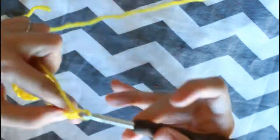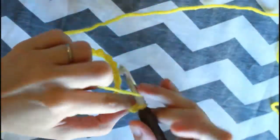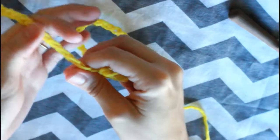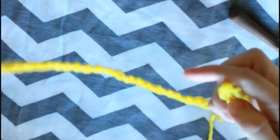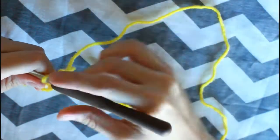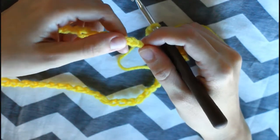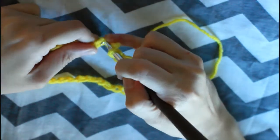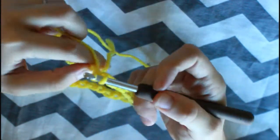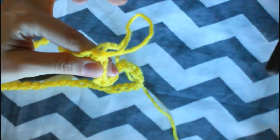Once you're done, we're gonna make sure that our work is not twisted because we have to join in the round and start working in the round. To join, we're gonna use the slip stitch, but make sure that nothing is twisted. And on the first chain stitch, you're gonna insert your hook and use a slip stitch. Make sure that you use your working yarn and not the remaining tail yarn from when you started.